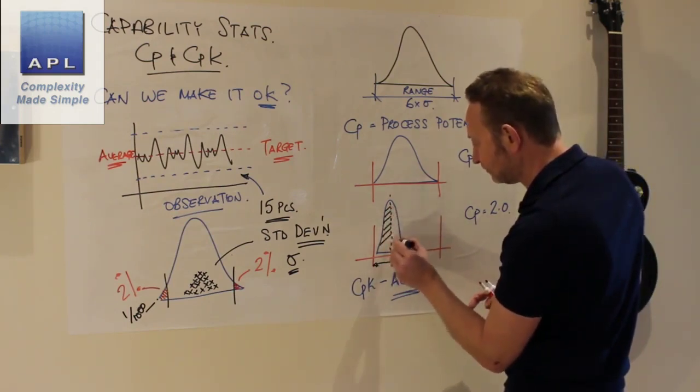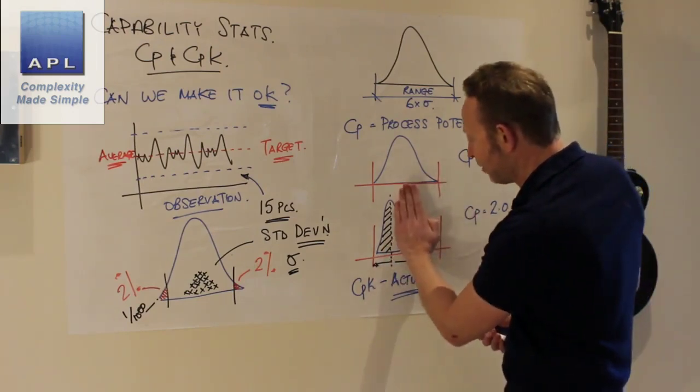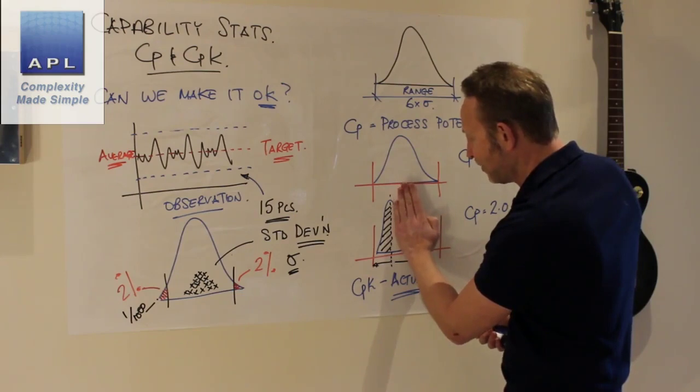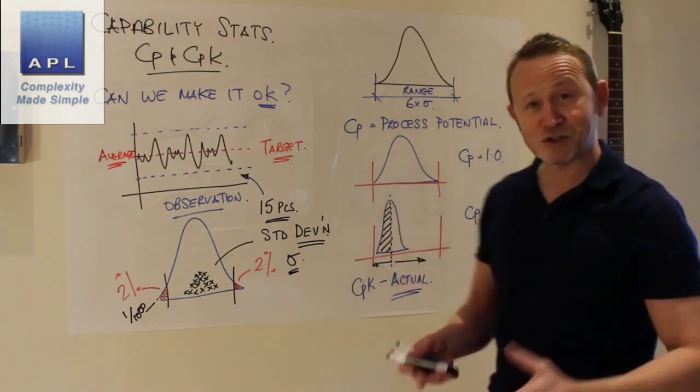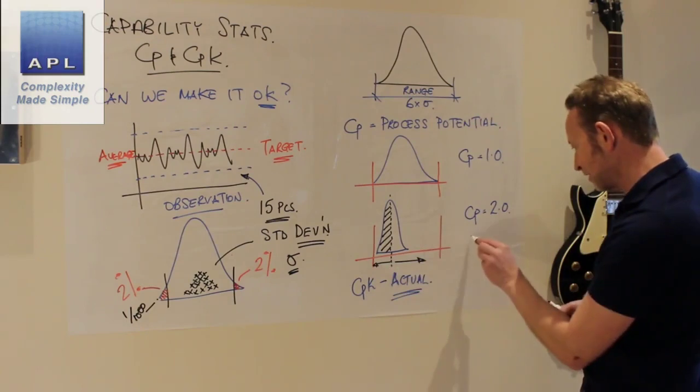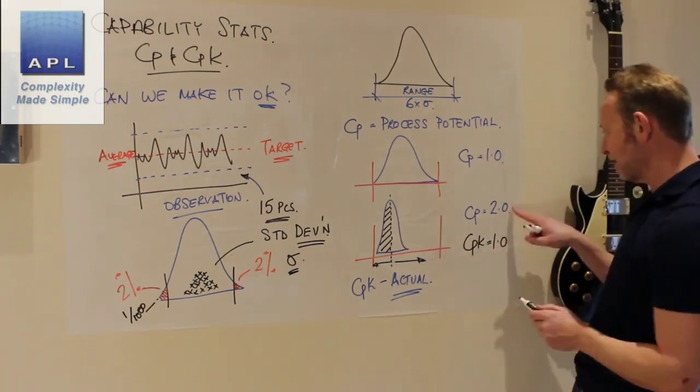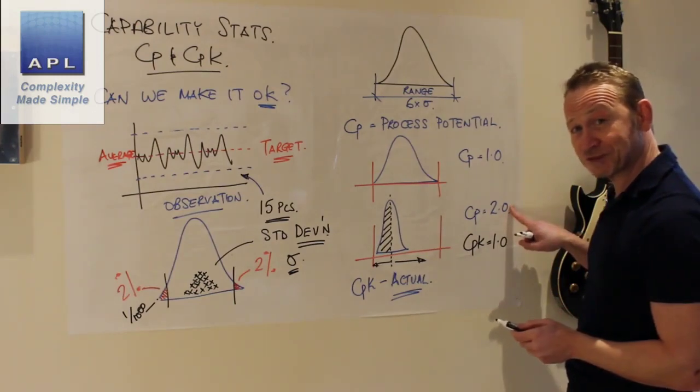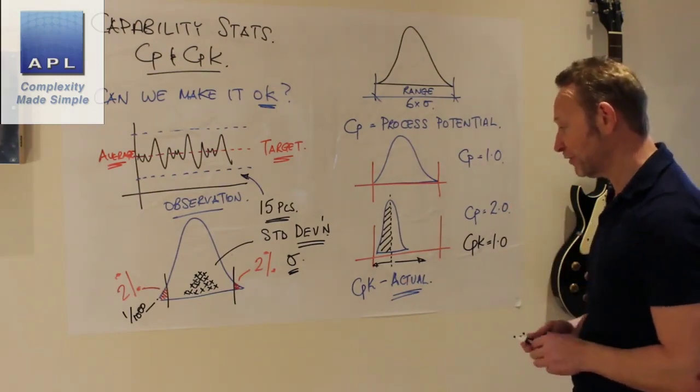Now because we're only going to look at half the tolerance this time, I'm only going to ask the question: how many times does half the process fit inside that space? So how many times does the black slice fit inside that space? CPK fits in there once. So potentially I have a potential of two, I have an actual of one.